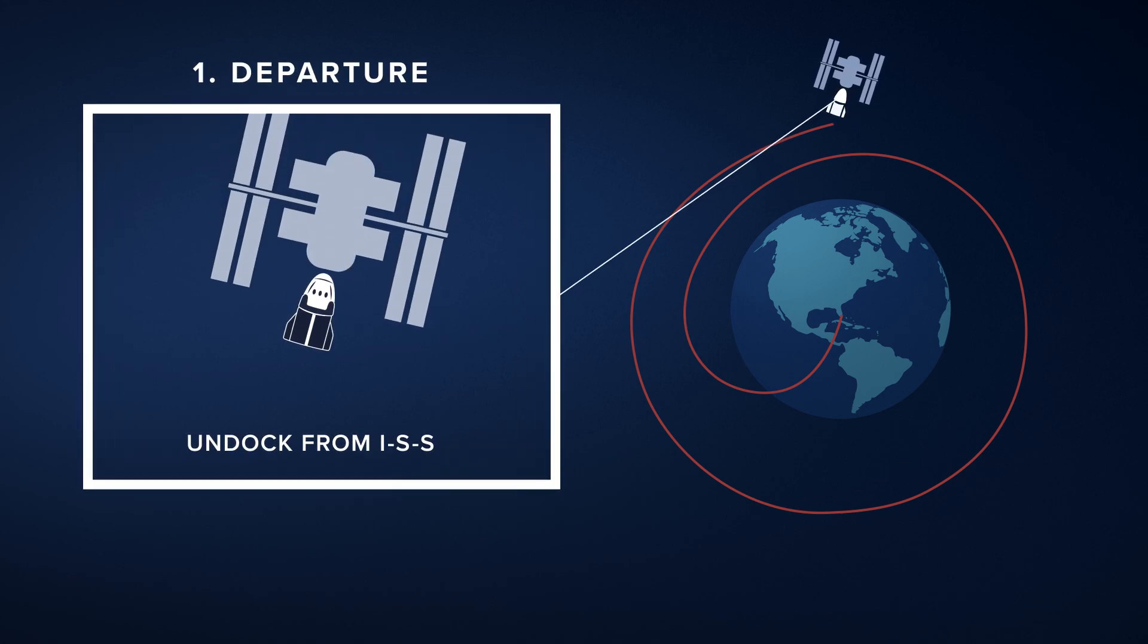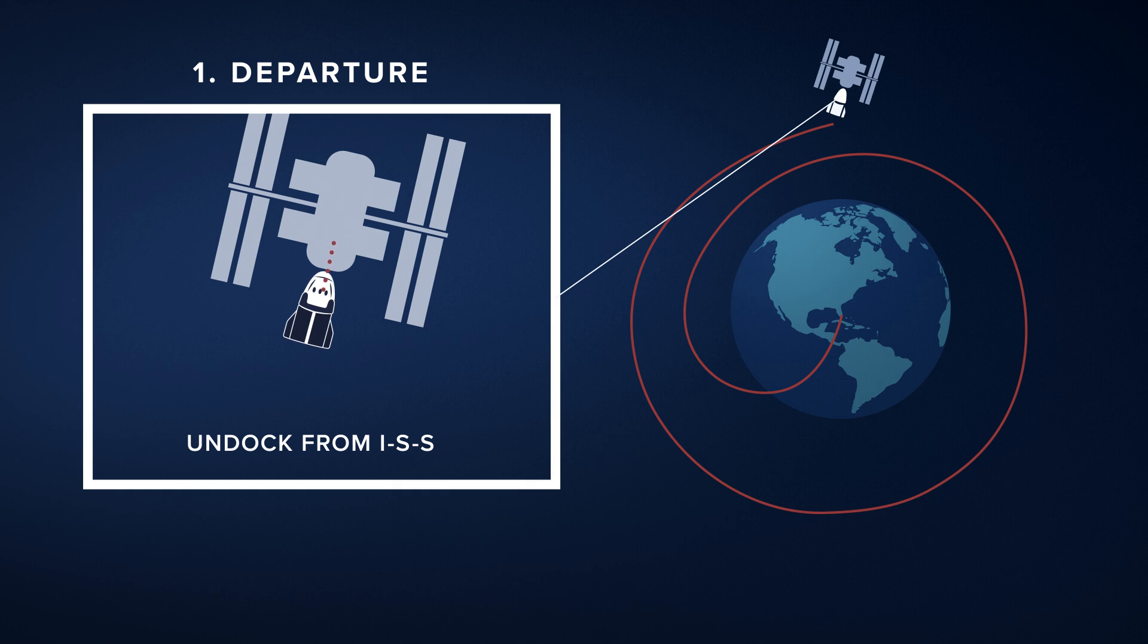The first step is to undock from the ISS. After the capsule has been packed up and prepped for undocking, Dragon will back away and slowly make its way outside of the Keep Out Sphere, a safety zone around the orbiting laboratory.